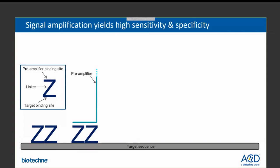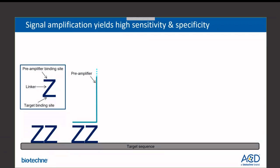When two Zs hybridize, it creates a binding site upon which a pre-amp can bind and the amplification tree can be built. A standard RNAscope probe for a target sequence of 1,000 bases or more would consist of 20 Z-Z pairs designed to hybridize next to each other. RNA scope pairs could vary depending on the sequence of interest, allowing for tremendous amplification and signal potential. Only a few double-Z pairs are needed to bind to the target RNA to generate enough signal for molecular detection.